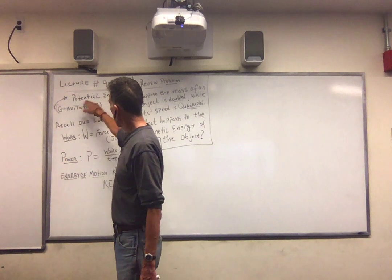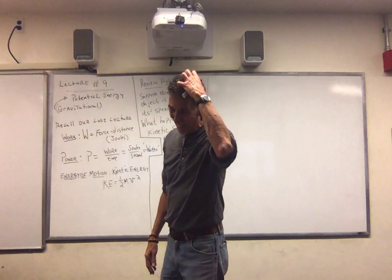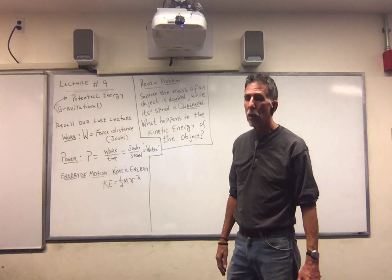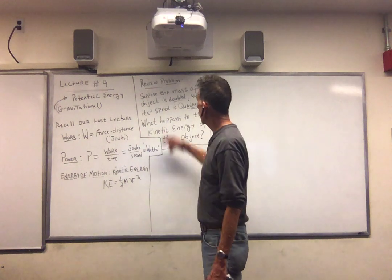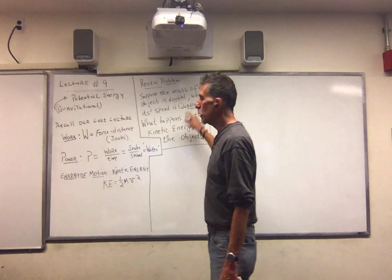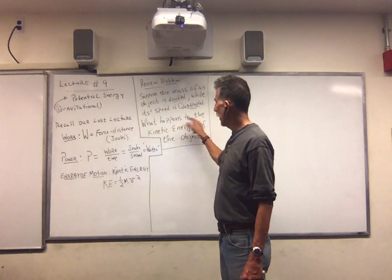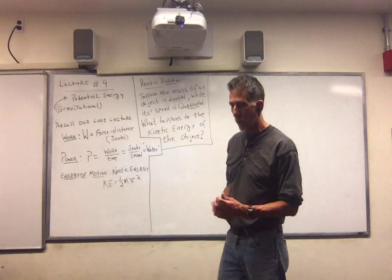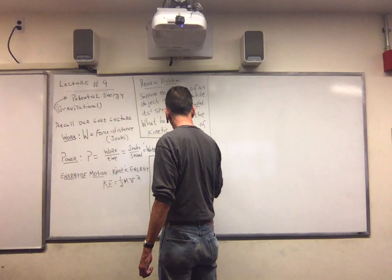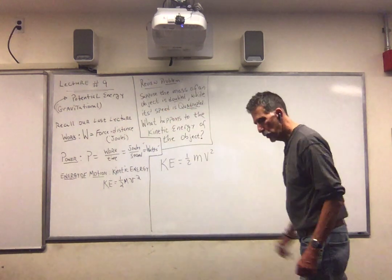Today, we're going to discuss potential energy, or gravitational potential energy. But before we do that, let's take a look at this review problem, because this is very much like what we will have on an exam. Suppose the mass of an object is doubled while its speed is quadrupled. What happens then to the kinetic energy of the object? So let's write it out. Kinetic energy is one half mv squared. That's the definition.